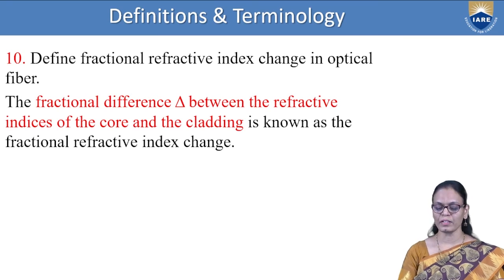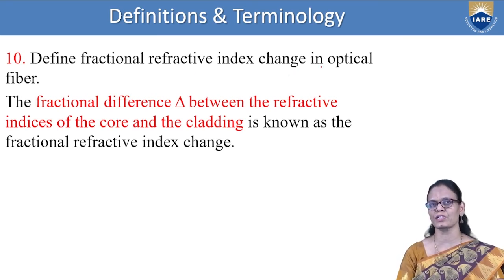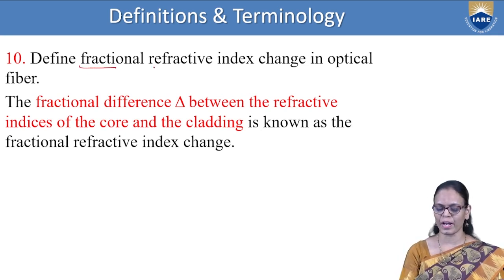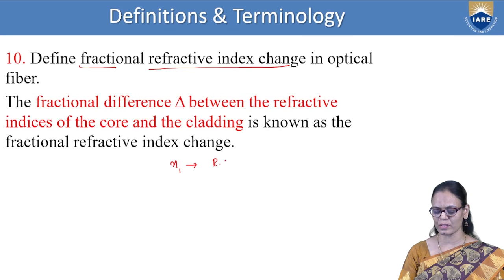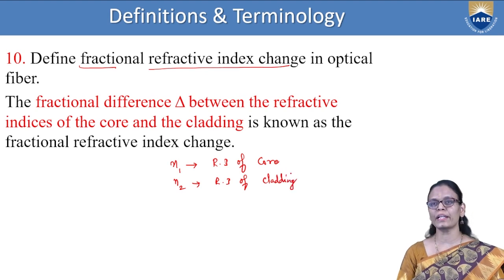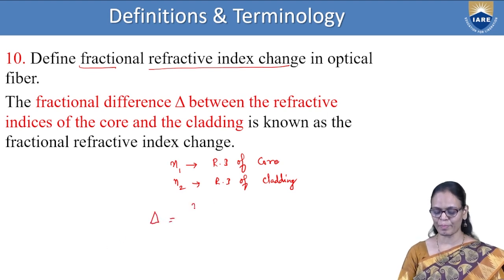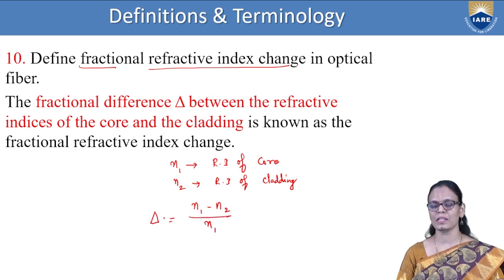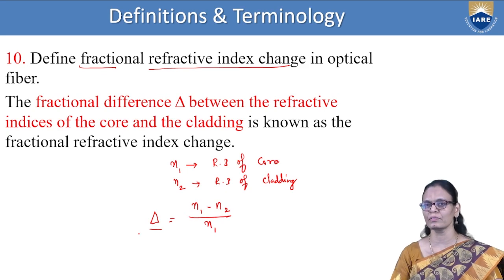Define fractional refractive index change in optical fibers. If N₁ is the refractive index of the core and N₂ is the refractive index of the cladding, then the fractional refractive index change, denoted by Δ (delta), is given by: Δ = (N₁ − N₂) / N₁. This gives us the fractional change in refractive index.